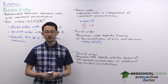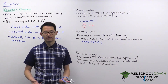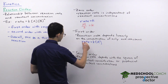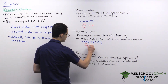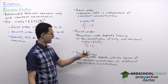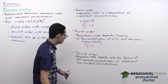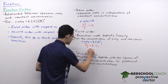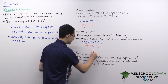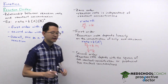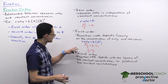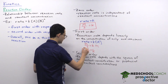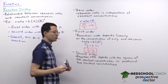In an SN1 reaction, the reaction rate only depends on the concentration of the electrophile. For the units of K in a first order reaction: rate has units of molar per second, and concentration has units of molar. Canceling molar from both sides gives the rate constant units of inverse seconds, which is different from the zeroth order rate constant of molar per second.